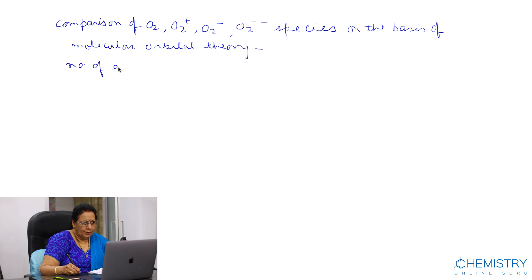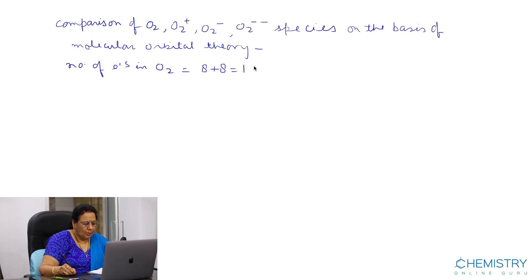The number of electrons in O2 is 8 plus 8, equal to 16. The configuration of the oxygen atom is 1s2, 2s2, 2p4.